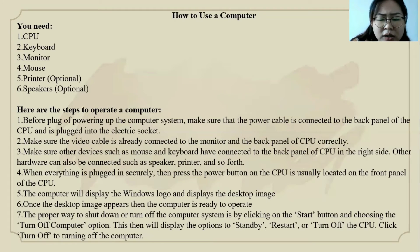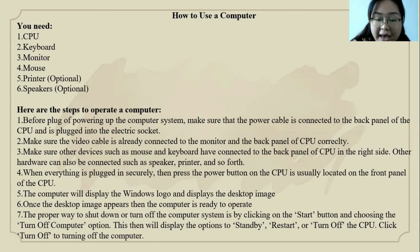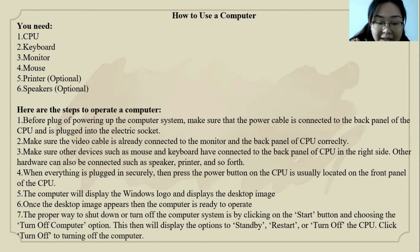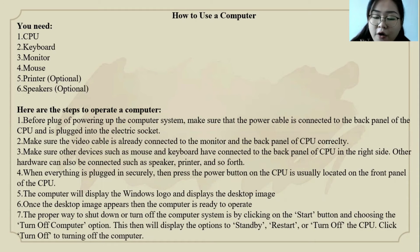The fourth step: when everything is plugged in securely, press the power button on the CPU, usually located on the front panel. The fifth step: the computer will display the Windows logo and then the desktop image. The sixth step: once the desktop image appears, the computer is ready to operate. The last step: the proper way to shut down the computer is by clicking the Start button and choosing Turn Off Computer, then clicking Turn Off.